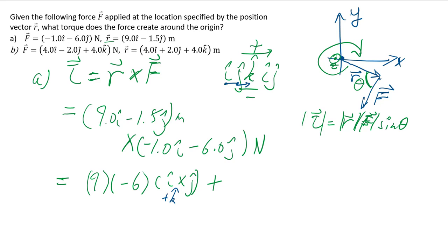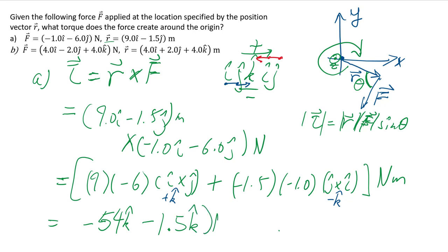And then next term is J cross I. So let's write each of the things out. Then you have J cross I. That would be negative K. And then you have J cross J, which is 0. Everything has a unit of Newton meter. And so here there's one negative sign. And then there's three negative signs on this one, so it's also negative.